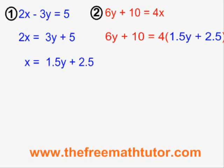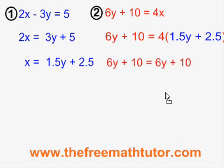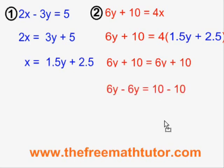I rewrite the second equation, showing this substitution. Using algebra to simplify, I get 6y plus 10 equals 6y plus 10. And then when I move the terms that contain the y variable together and move the constant terms together, I end up with 6y minus 6y equals 10 minus 10. And this results in 0 equals 0.